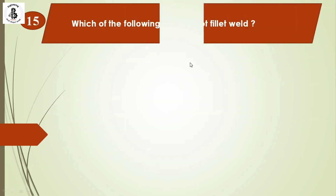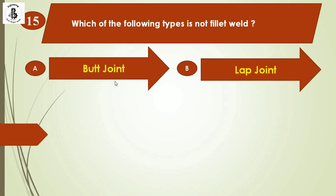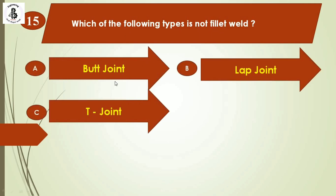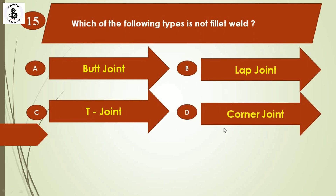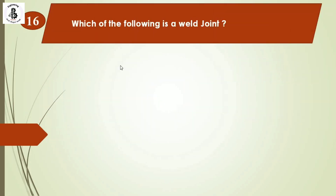Question 15: Which of the following types is not a fillet weld? Option A: butt joint, option B: lap joint, option C: T-joint, option D: corner joint. Lap joints, T-joints, and corner joints are categories of fillet welds, but a butt joint is not a fillet joint. The right answer is option A: butt joint.